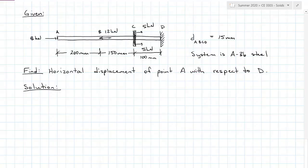This time we're given a system with a solid shaft that has a diameter of 15 millimeters. The entire system is A36 steel, and we want to find the horizontal displacement of point A with respect to D. We have three distinct deflections: A to B, B to C, and C to D. We're going to find all three and add them together. Looking in the back of my book, I find that the modulus of elasticity for A36 steel is 200 gigapascals.